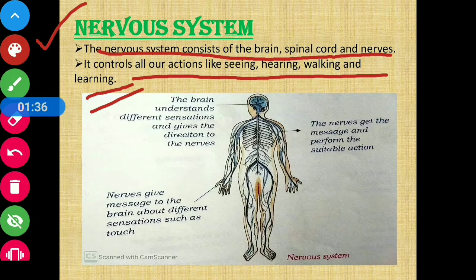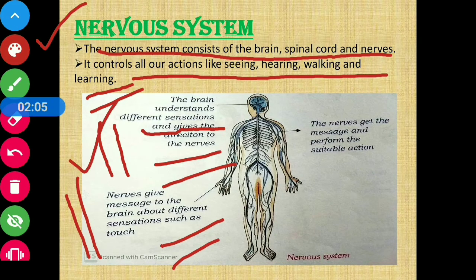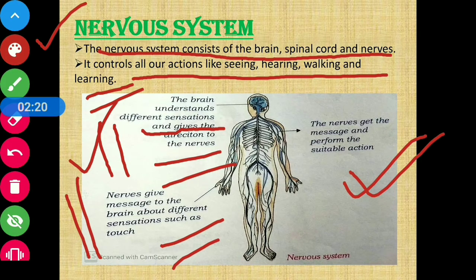Let us find out how the nervous system works. The nerves send messages to the brain about different sensations, such as touch. The brain understands these different sensations and gives directions to the nerves. The nerves then receive those messages and perform the suitable action. This is how the nervous system works.